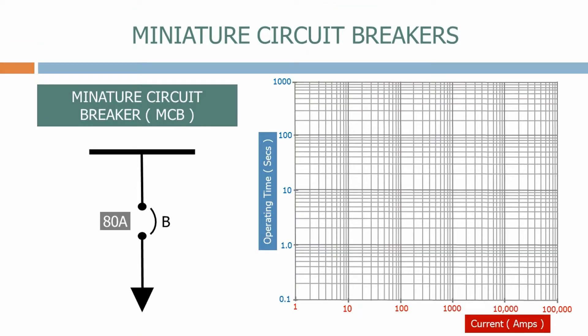Here we have a type B MCB rated at 80 amps protecting a feeder circuit. Let's look at the typical characteristic. As we can see the top half of the characteristic is very similar to the curve we've seen on the fuses that we looked at previously.